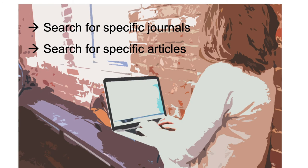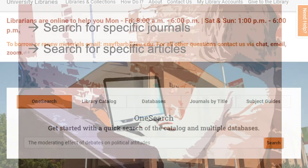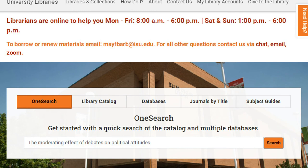In this tutorial, we have shown you how to search for specific journals and specific articles using the Journals by Title tab on the library homepage. This feature helps us find and access journals, including the articles in them. Some researchers might find it saves time to search for specific articles using the library's OneSearch database, which is the default search engine on the library homepage.